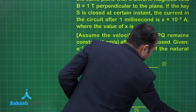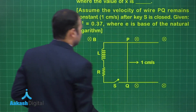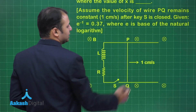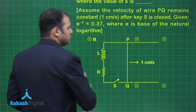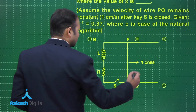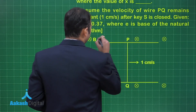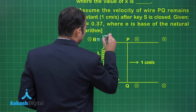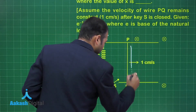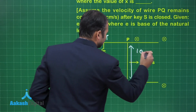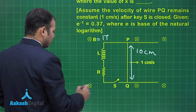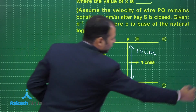Looking at the diagram, we can see the rails and the rod which is 10 centimeters long, moving in one direction. The magnetic field is going inside the plane, with a value of 1 Tesla. The length of this segment is 10 centimeters.